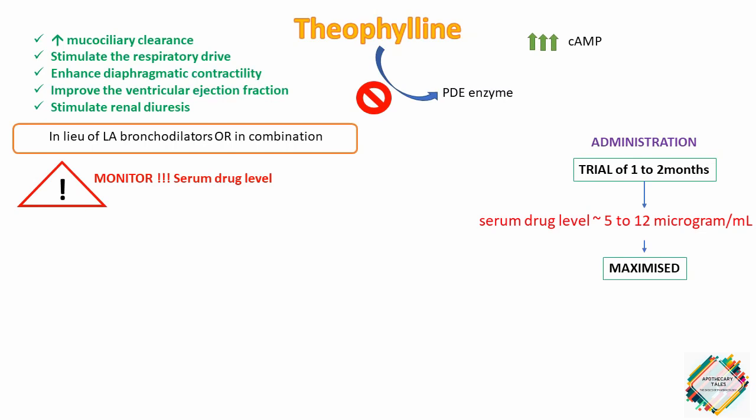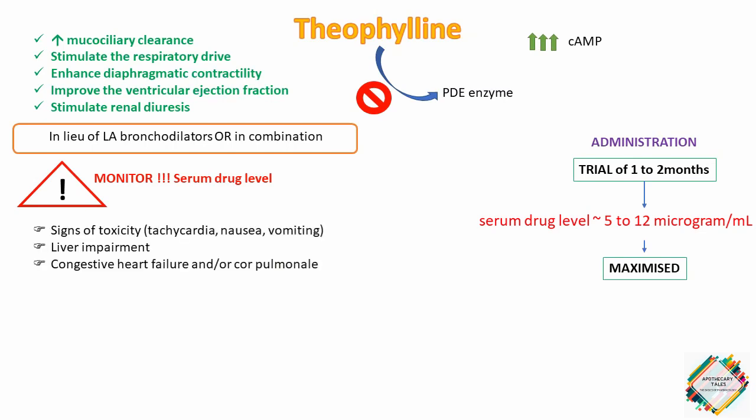Serum drug levels should be closely monitored in all patients — especially those with signs of toxicity such as tachycardia, nausea, and vomiting — as well as in patients with liver impairment, congestive heart failure, and/or cor pulmonale, due to reduced theophyllin metabolism. Potential drug interactions, such as with ciprofloxacin, may warrant blood level testing.